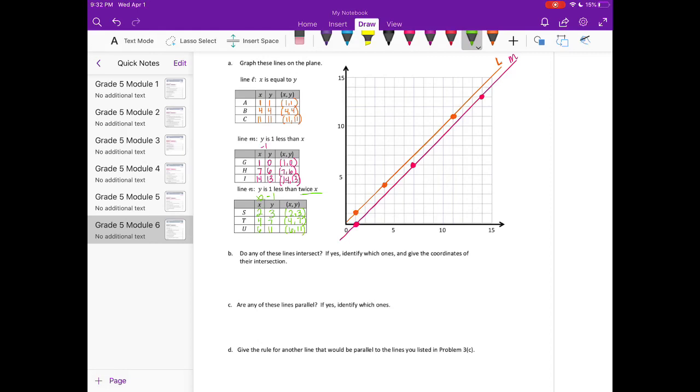If I have x as 6, 6 times 2 is 12 minus 1 is 11. So let's plot those: 2, 3, 4, 7, and 6, 11. That is line N.